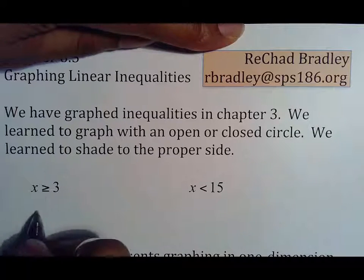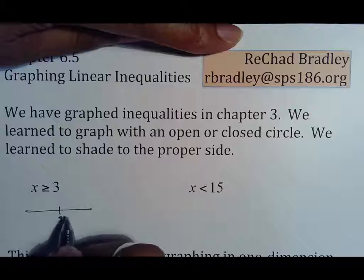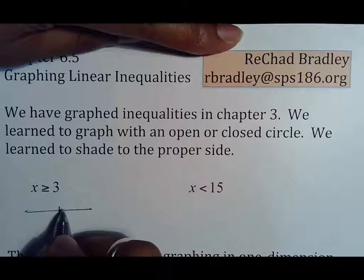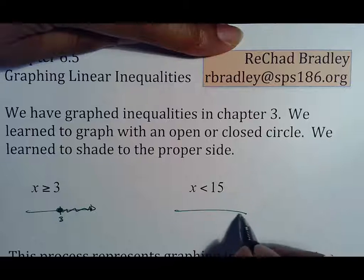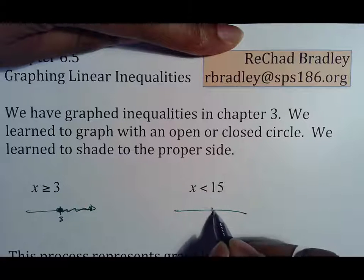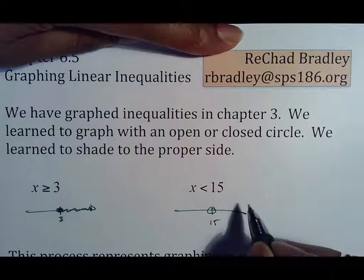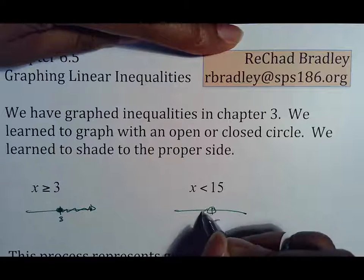So far what we should know about inequalities is if x is greater than or equal to 3, we put a 3. We close it because it says equal to 3, and we shade it to the right. We learned that when we have x is less than 15, we put a 15 open circle because it's not equal to 15, and that this is pointing to the left.